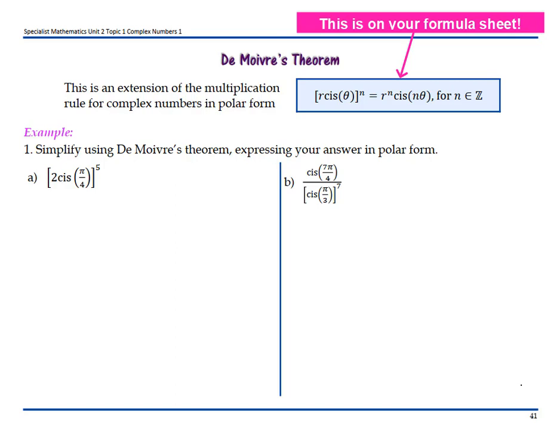Simplify using De Moivre's theorem, expressing your answer in polar form. The first one is 2 cis(π/4) to the power of 5. That is going to equal 2 to the power of 5, cis(5π/4).